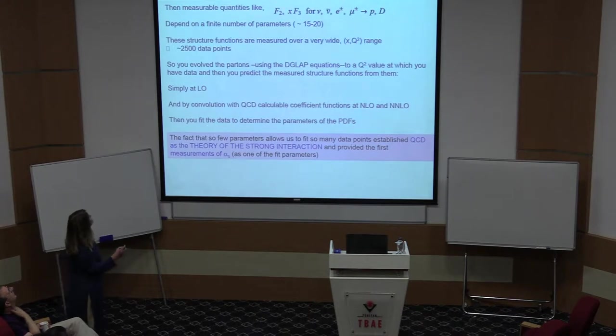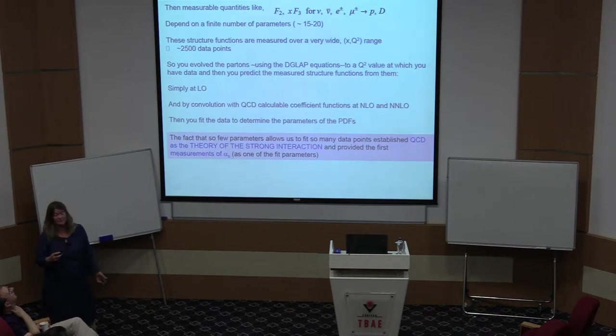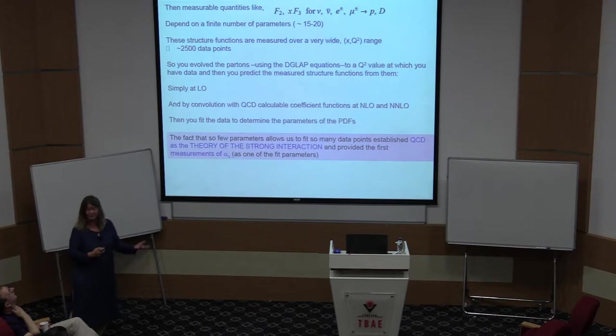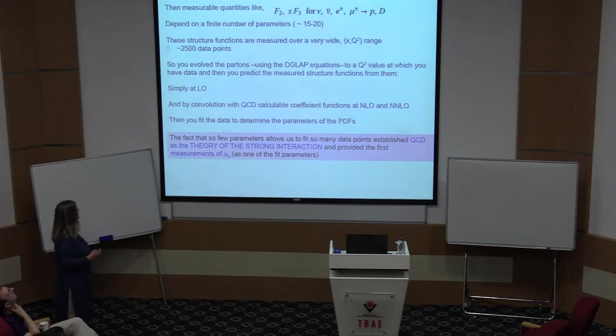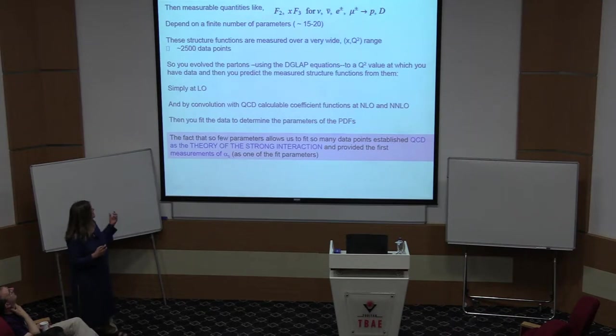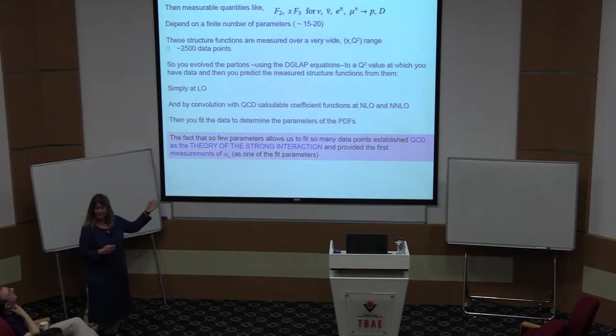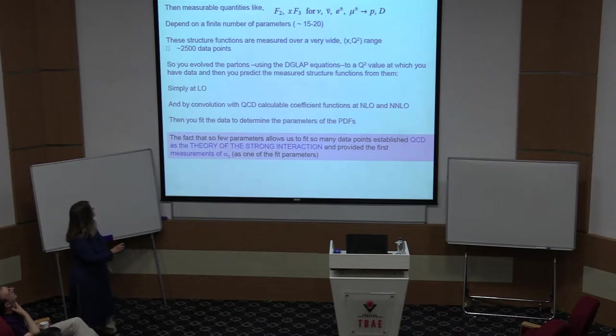Then what do we do? Well, the measurable quantities I was telling you about yesterday, the structure functions that we get in neutrino, anti-neutrino, and charged lepton scattering on proton and deuteron targets are then going to depend on that finite number of parameters, ballpark 15 to 20 parameters. But these structure functions are actually measured over a very wide range in the kinematic plane of X and Q squared. And we have more than 2,000 data points. So what you do is you take your initial parameterization and you evolve it using the DGLAP equations up to Q squared values where you've actually got data. And then you use the QCD formalism on the partons to get to the measurable structure functions.